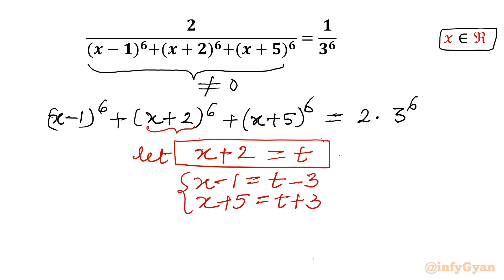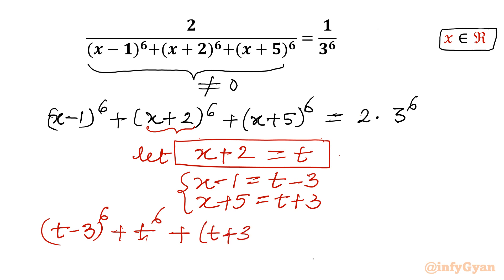Now I will put this substitution into our original equation, which will be in variable t. So x minus 1 becomes (t minus 3) whole power 6, x plus 2 becomes t to the power 6, and x plus 5 becomes (t plus 3) whole power 6. The right hand side is 2 times 3 to the power 6.